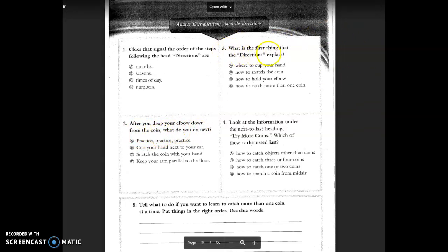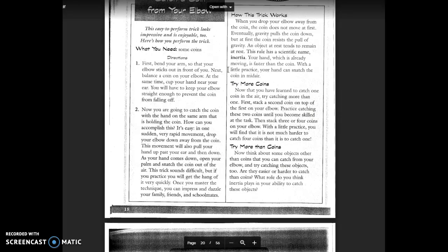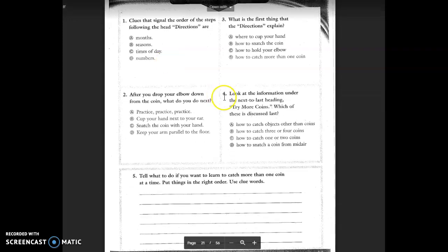Number three, what is the first thing that the directions explain? A, where to cup your hand? B, how to snatch the coin? C, how to hold your elbow? Or D, how to catch more than one coin? So, make sure you go back to directions and find the first thing that it explains. So, here's directions. Find the first thing that it explains how to do.